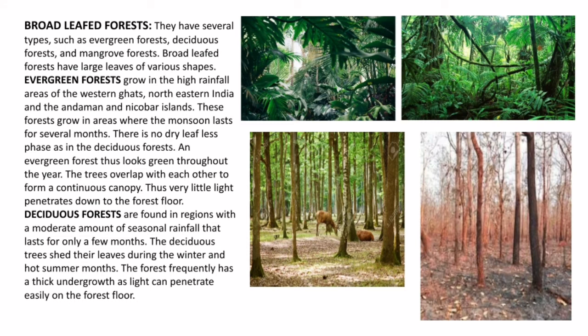Next we have broadleaf forest. They have several types such as evergreen forest, deciduous forest, and mangrove forest. Broadleaf forests have large leaves of various shapes, and depending on the regions they are found, they are further classified. First is evergreen forest — as the name says, these forests are always dense with plants which are green throughout the year, as the rainfall in this region is high and remains somewhat consistent throughout the year. Evergreen forests grow in the high rainfall areas of the Western Ghats, northeastern India, and the Andaman and Nicobar Islands.